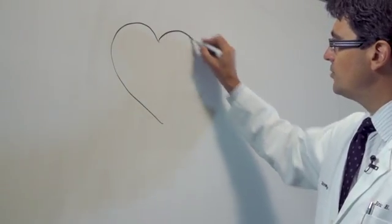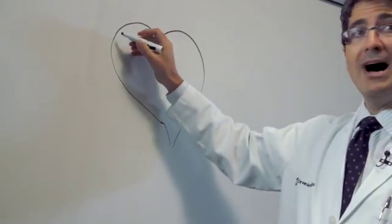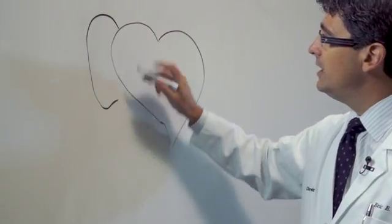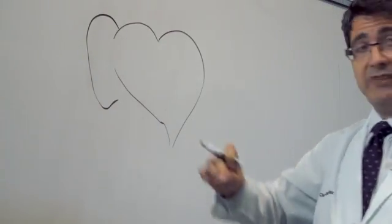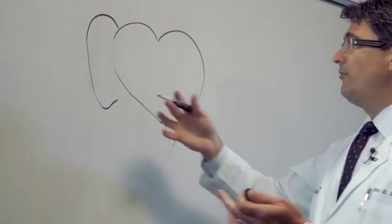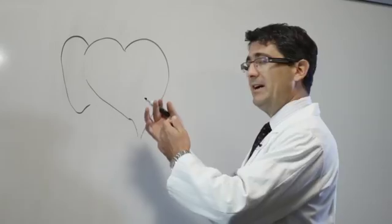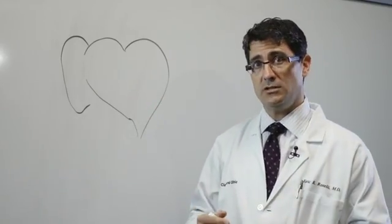On the right side are the tricuspid valve and the pulmonic valve. They take the dark venous blood from the body into the right side of the heart and send the blood flow to the lungs.